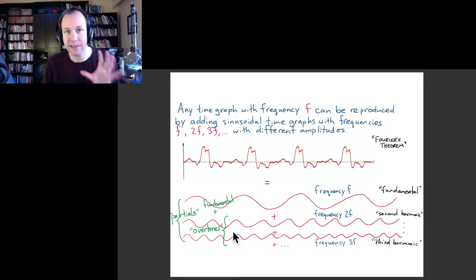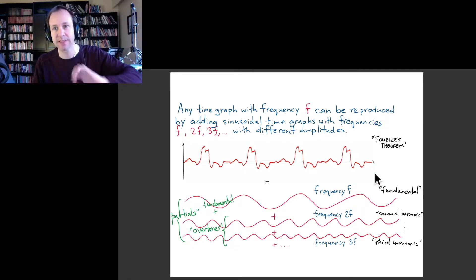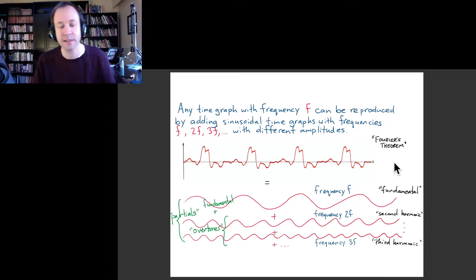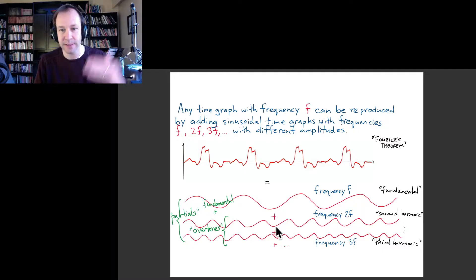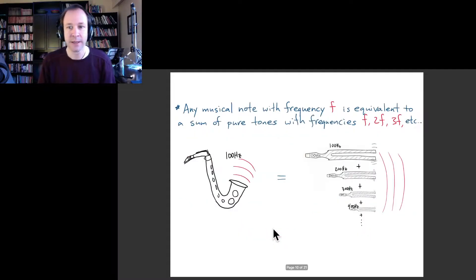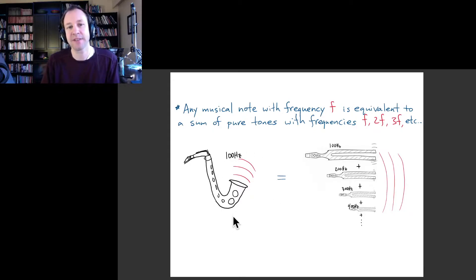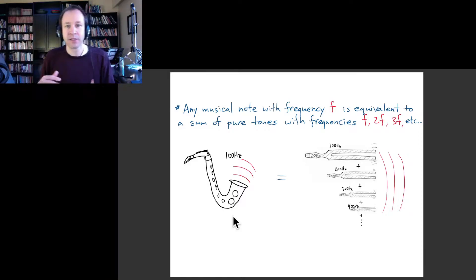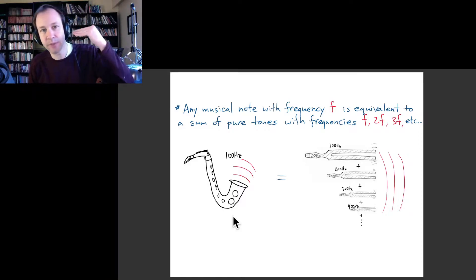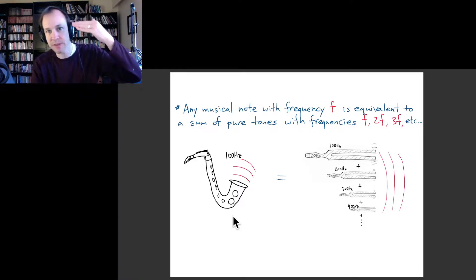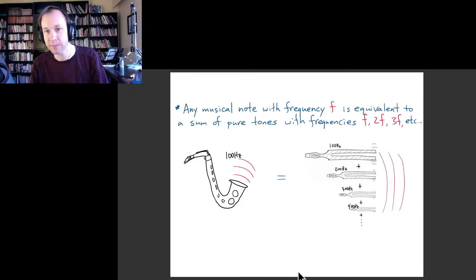The physical consequence of this mathematical statement — basically called Fourier's theorem — is that any periodic function can be written as a sum of sinusoidal waves. In terms of music, you could take the sound of a saxophone, and that is entirely equivalent to a sound produced by just combining pure tones with the fundamental frequency and various multiples.